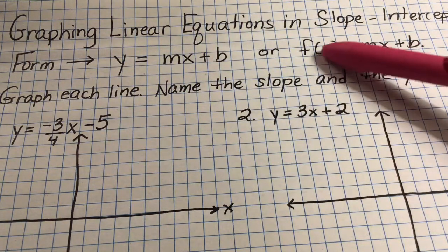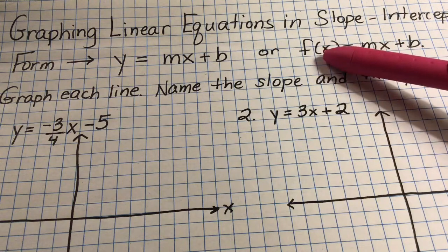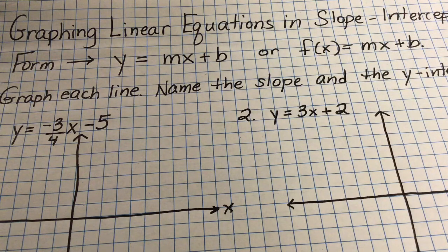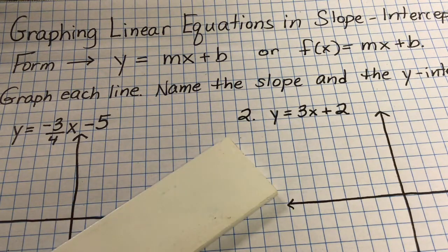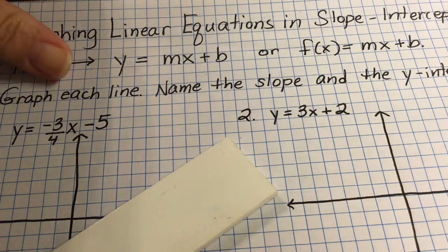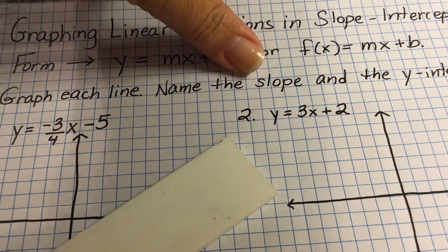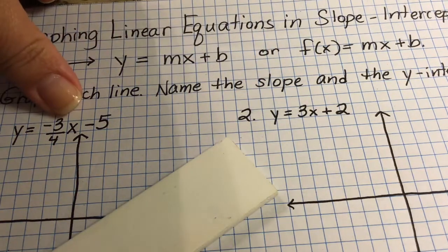It's just fancy notation to rewrite y as f of x. We're going to graph each line. I'll get my ruler out. To graph each line, we're going to name the slope and the y-intercept first — even though the instructions say graph first, then name them, we'll actually name slope and y-intercept first, then graph.